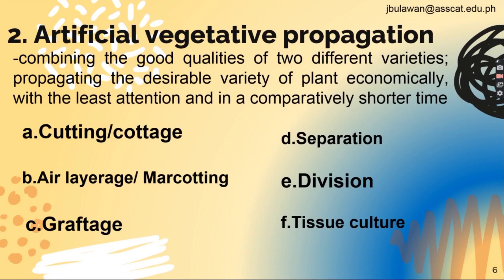Our second topic is artificial vegetative propagation, which involves combining the good qualities of two different varieties and propagating the desirable variety economically with the least attention in a comparatively shorter time. The methods are: A) cuttings or cutting, B) air layerage or marcotting, C) graftage or grafting, D) separation, E) division, and F) tissue culture.